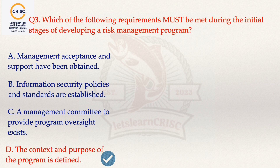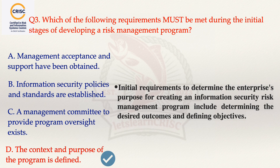Options A and D are both quite tempting. However, looking at the keyword of the question — 'during the initial stage' — this means management approval is already in place. Hence the correct answer is D, because the initial requirement is to determine the enterprise purpose for creating an information security risk management program, including determining the desired outcome and defining objectives.